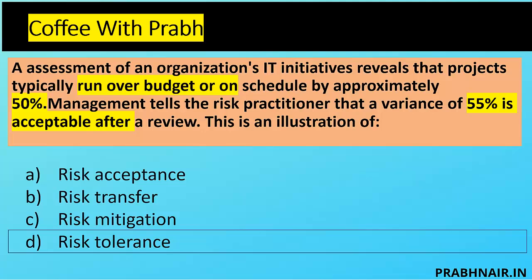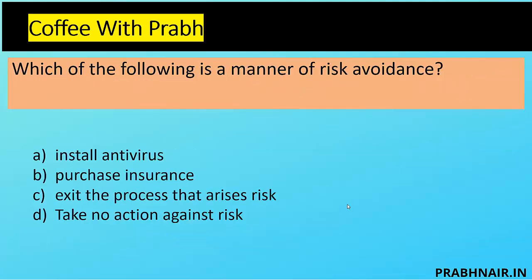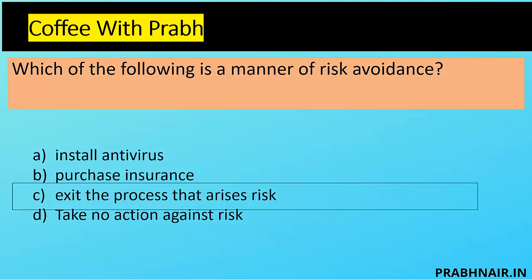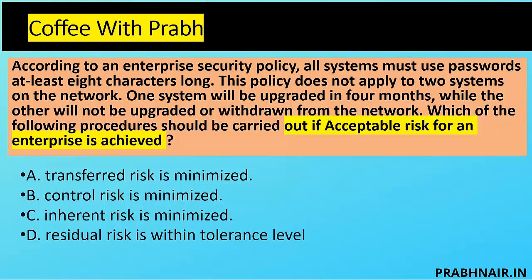Next coffee shot: which of the following is a manner of risk avoidance? Installing antivirus is risk mitigation. Purchasing insurance is risk transfer. Taking no action against the risk is risk acceptance. But exiting the process that arises a risk is risk avoidance. The answer is C.